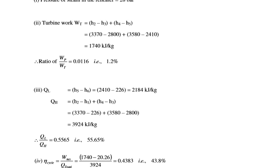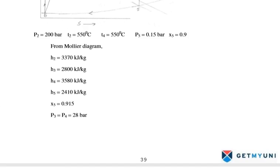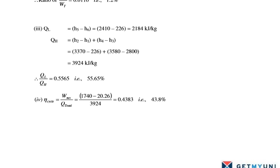Now find QL = H5 minus H6 = 2410 minus 226 = 2185 kJ per kg (approximately). QH = (H2 minus H1) + (H4 minus H3) = (3370 minus 246.26) + (3580 minus 2800) = 3924 kJ per kg. The ratio QL/QH = 2185/3924 = 0.5565, which is 55.65% — the ratio of heat rejection to heat addition.